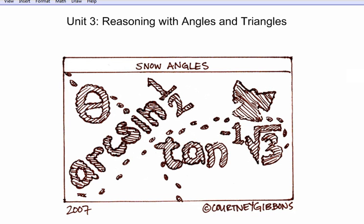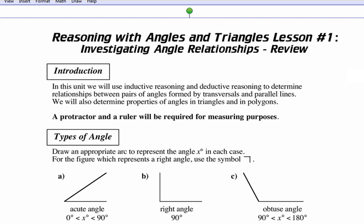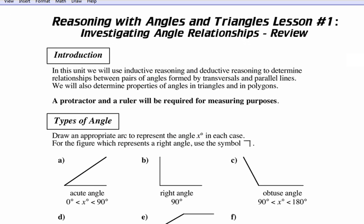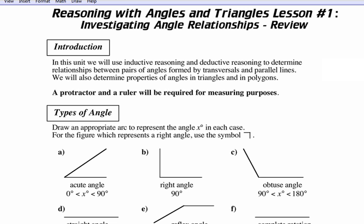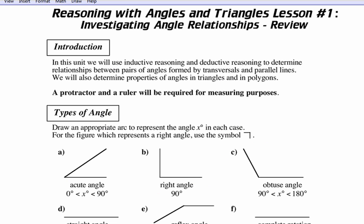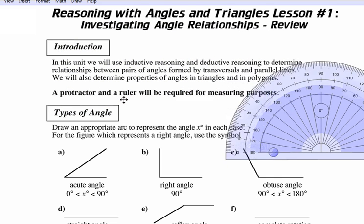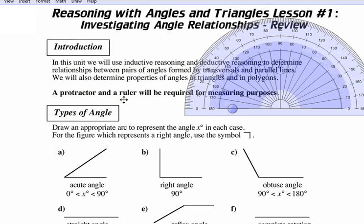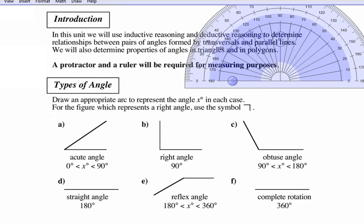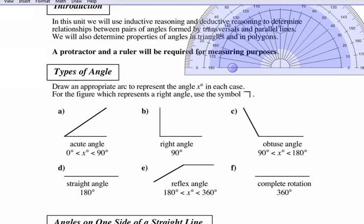Here we are on reasoning with angles and triangles, lesson one. Some of this should be review, some might be new. You will need a protractor for this lesson — the protractor is this tool right here. You will also need a ruler. The lesson covers drawing appropriate types of angles.